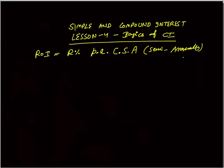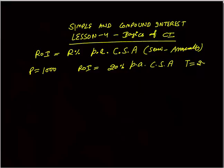Let me take an example. Let's say P is Rs. 1000 as the initial principal, rate of interest is 20% per annum compounding semi-annually, and time is two years, starting 1st January 2012.